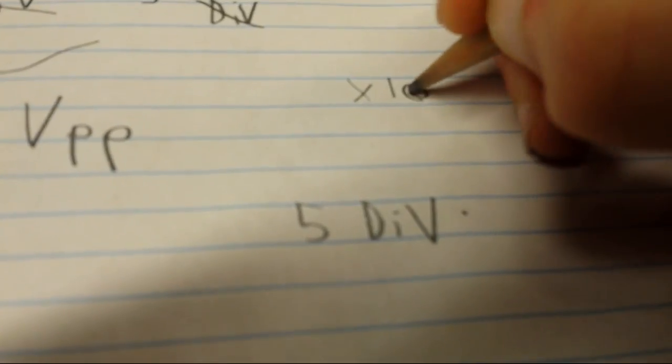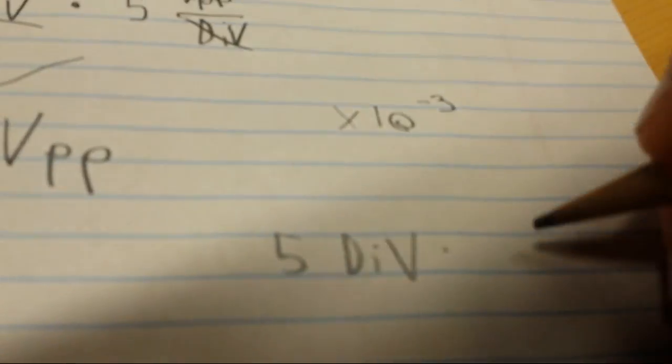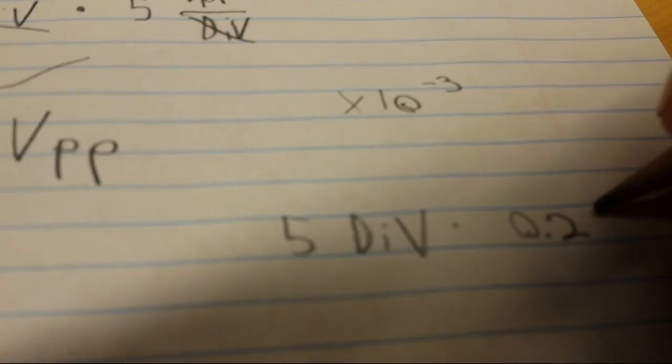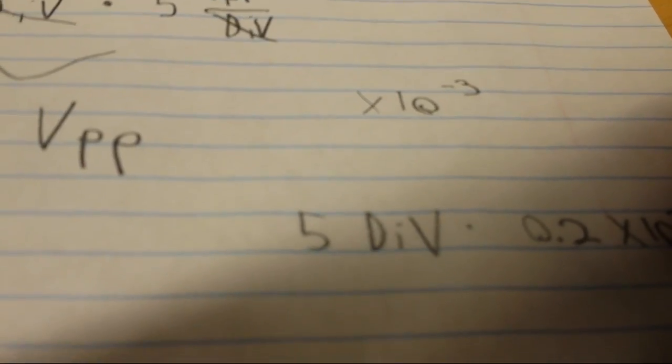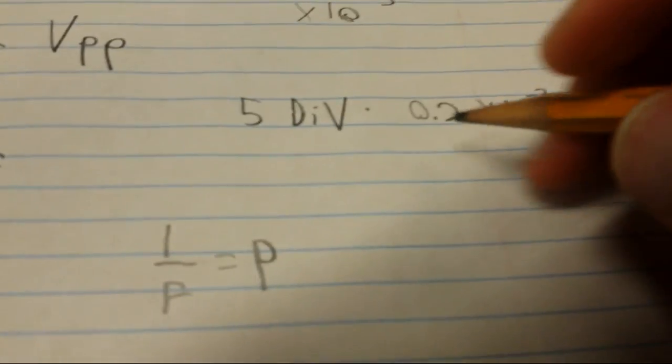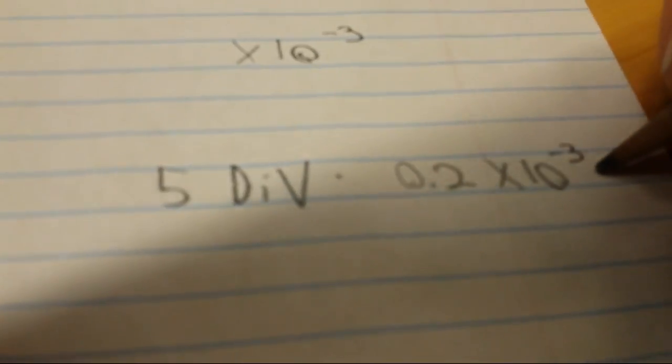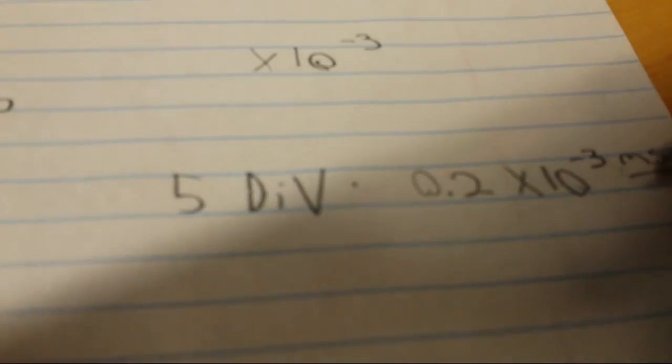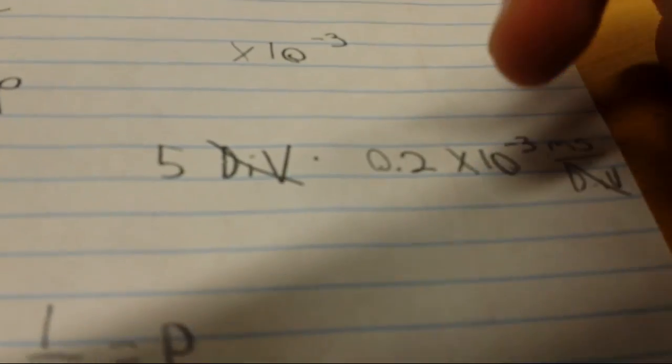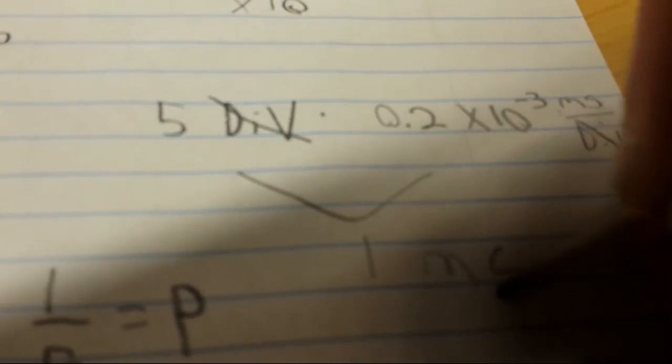Now, milliseconds, you'll also see it is expressed as 10, as a number times 10 to the negative third. So, it is 0.2 times 10 to the negative third. Now, when you do the math, and we make this milliseconds per division, the divisions cancel, and you will end up getting 1 millisecond.